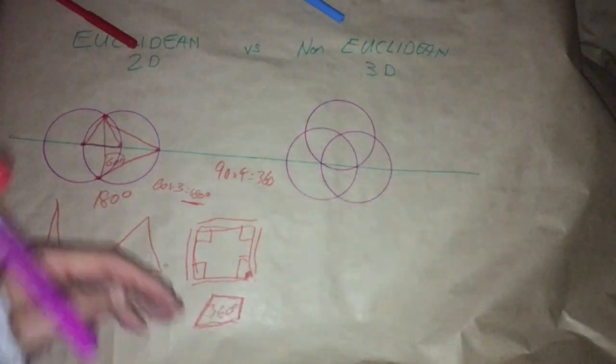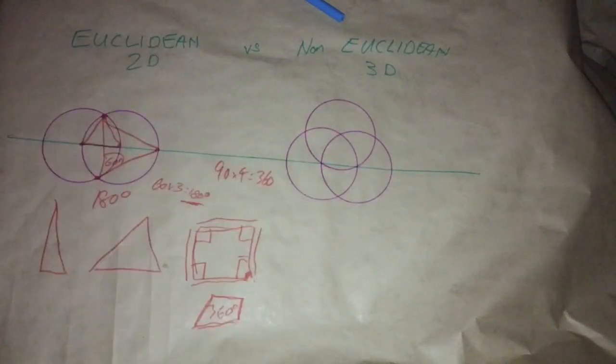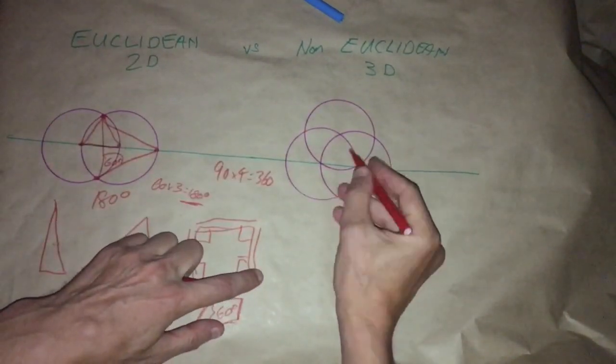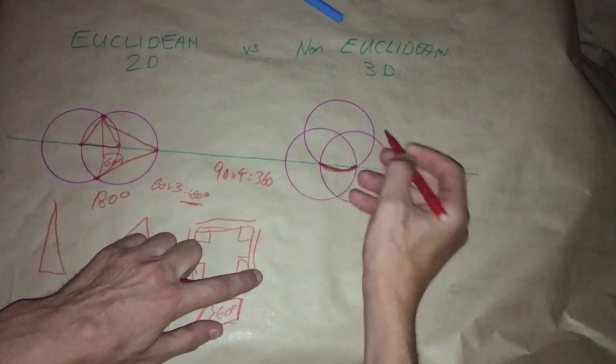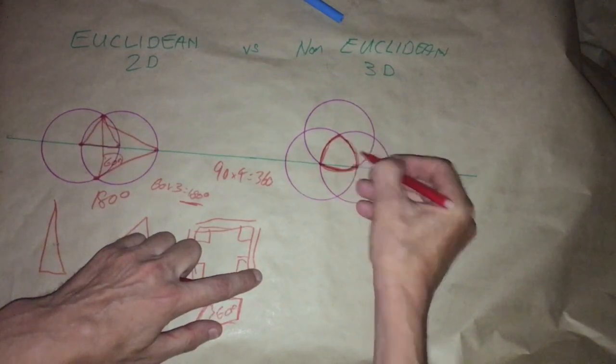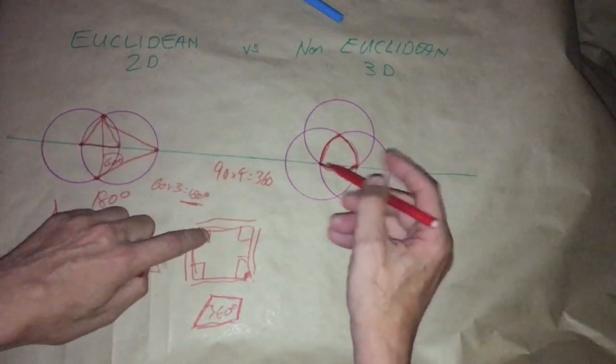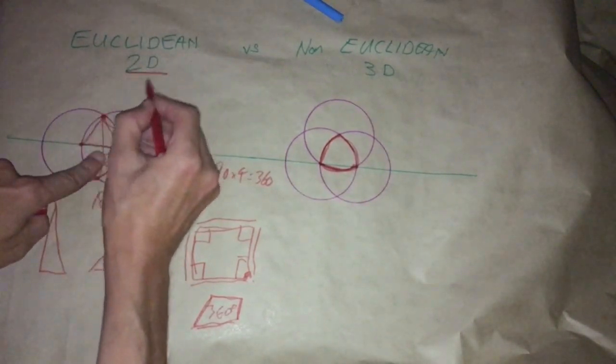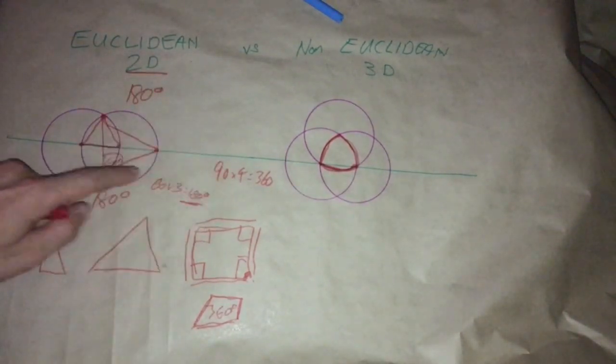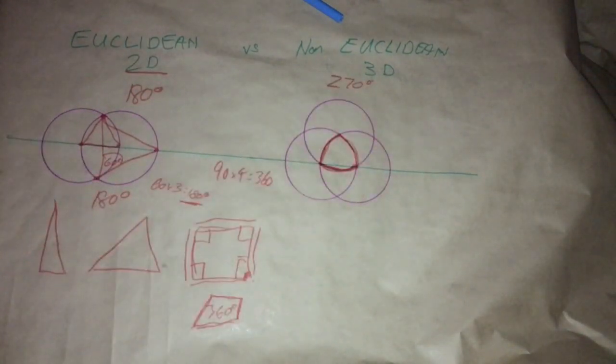And there we have a very good representation of a three-dimensional triangle on a two-dimensional plane. By that I mean this is a very good approximate representation of a three-dimensional triangle in two-dimensional space. Now all 2D triangles equal 180 degrees. All 3D triangles equal 270 degrees. This is 90 degrees, 90 degrees, and 90 degrees.